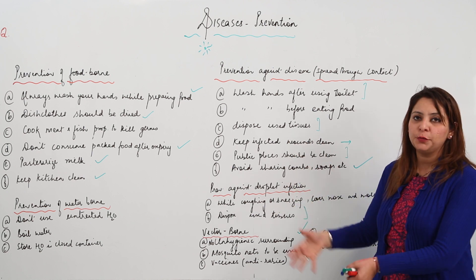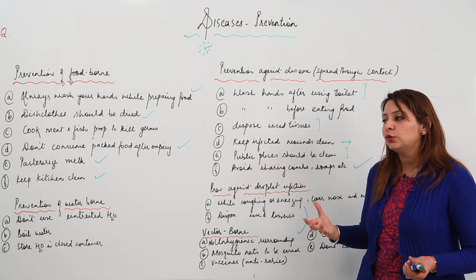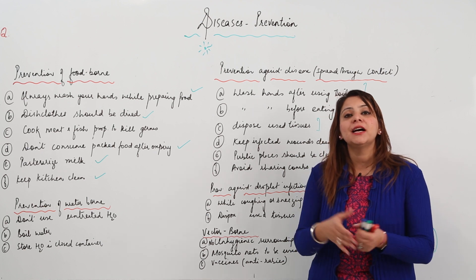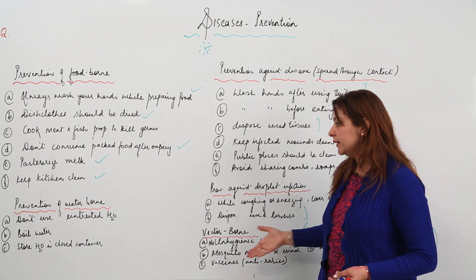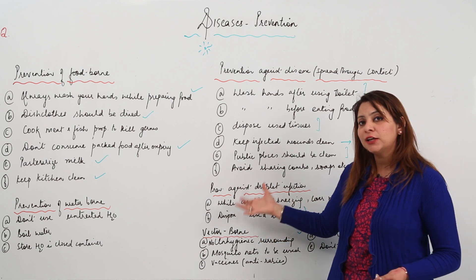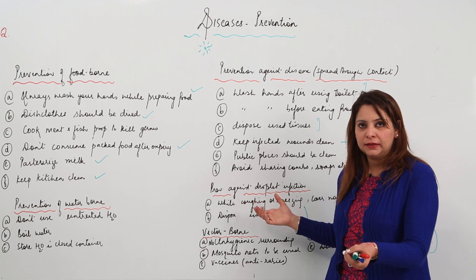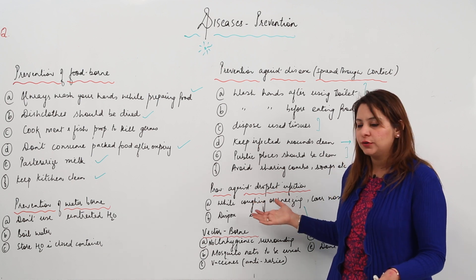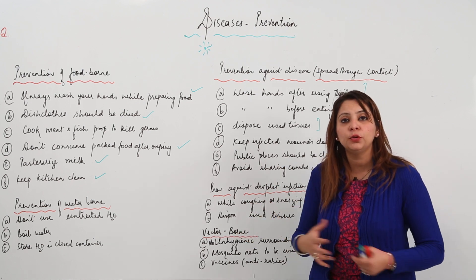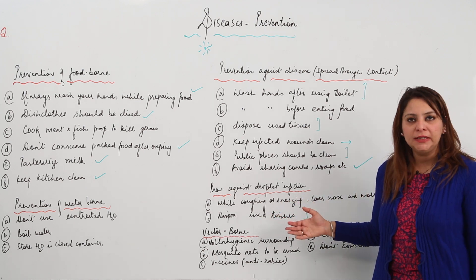If you follow even 90% of these prevention measures against these diseases, you can make a significant effort to prevent yourself from getting sick. Analyze these causes and how diseases spread according to these routes, take these precautions, and you can save your life and many others. This is the prevention against many diseases.